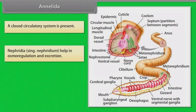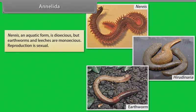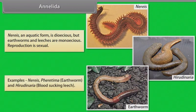Nephridia (singular: nephridium) help in osmoregulation and excretion. The neural system consists of paired ganglia (singular: ganglion) connected by lateral nerves to a double ventral nerve cord. Aquatic forms are dioecious, but earthworms and leeches are monoecious. Reproduction is sexual. Examples: Pheretima, that is earthworm; Hirudinaria, that is the blood-sucking leech.